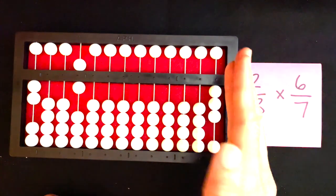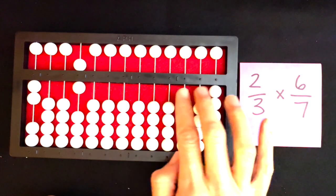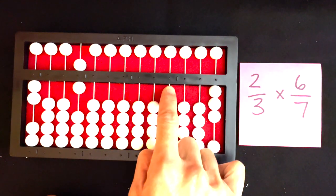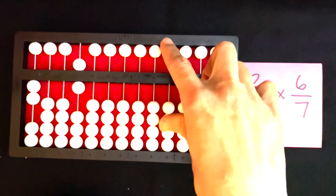Likewise, for the denominator, I'll start on the right-hand side, skip two rods, and set the seven on the thousands rod.